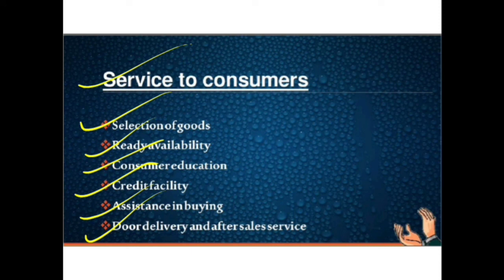In our previous video we discussed about wholesale trade and wholesalers, and now we have discussed about retail trade and retailers. You can now easily differentiate between wholesalers and retailers: a wholesaler is a link between the retailer and manufacturer, while a retailer is a link between consumers and wholesalers. A wholesaler operates on a large scale and a retailer on a small scale. A wholesaler deals in few items while a retailer handles a large number of items. You can add more points using the features and services discussed.